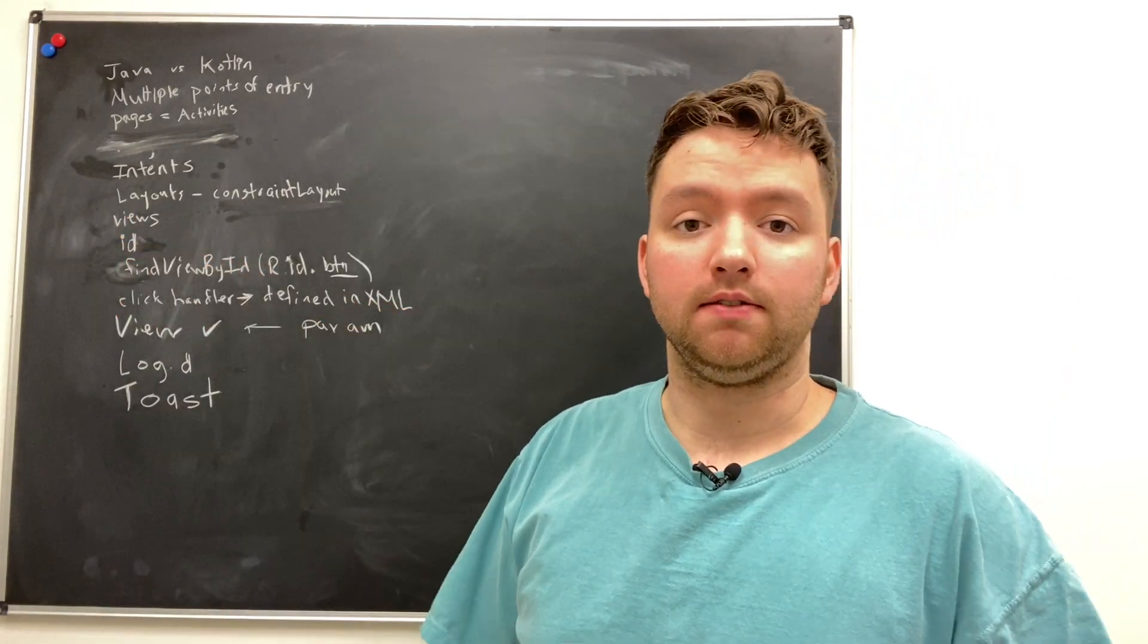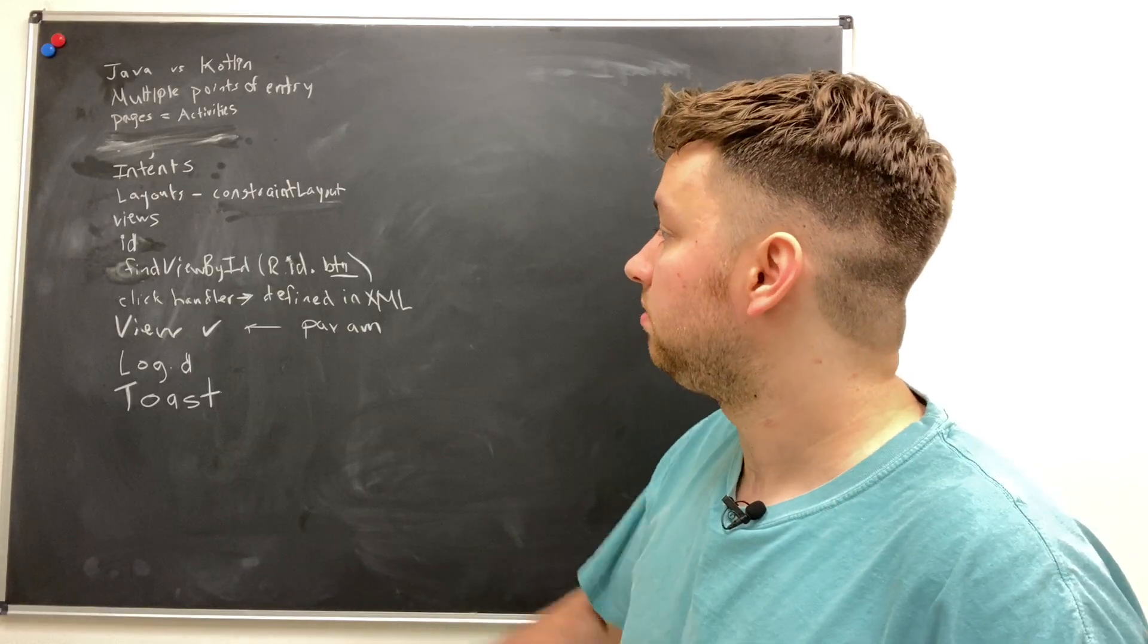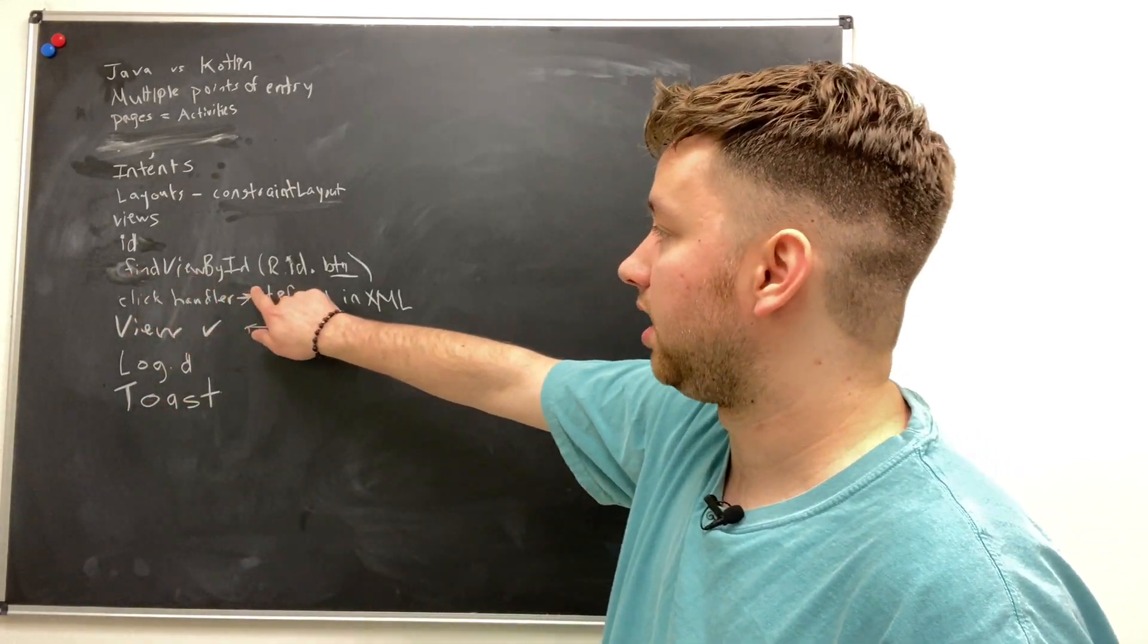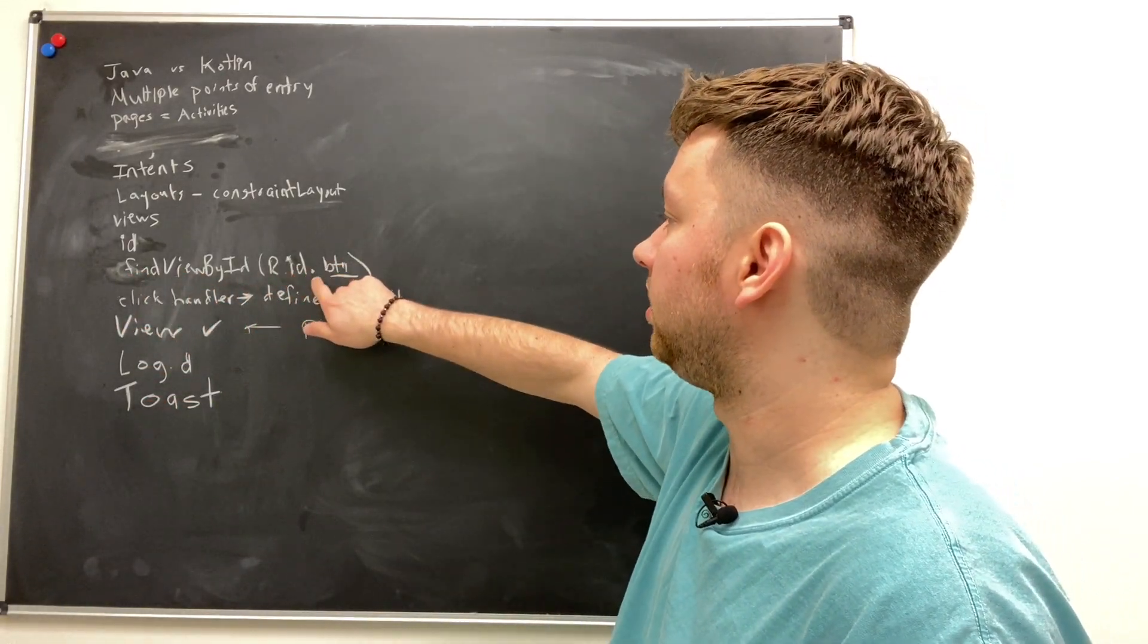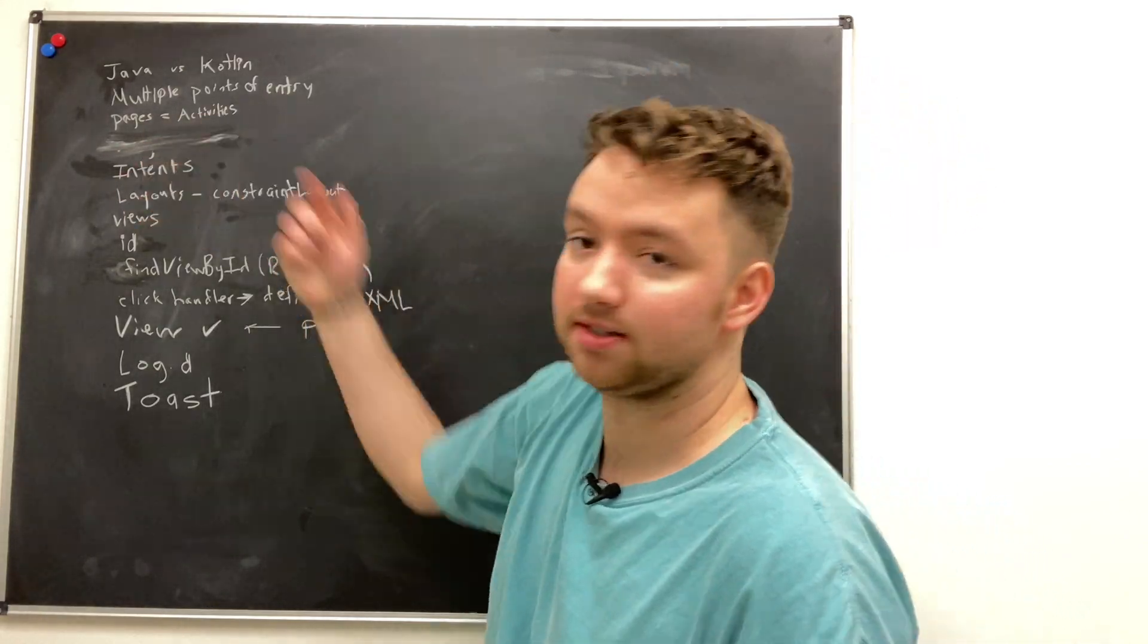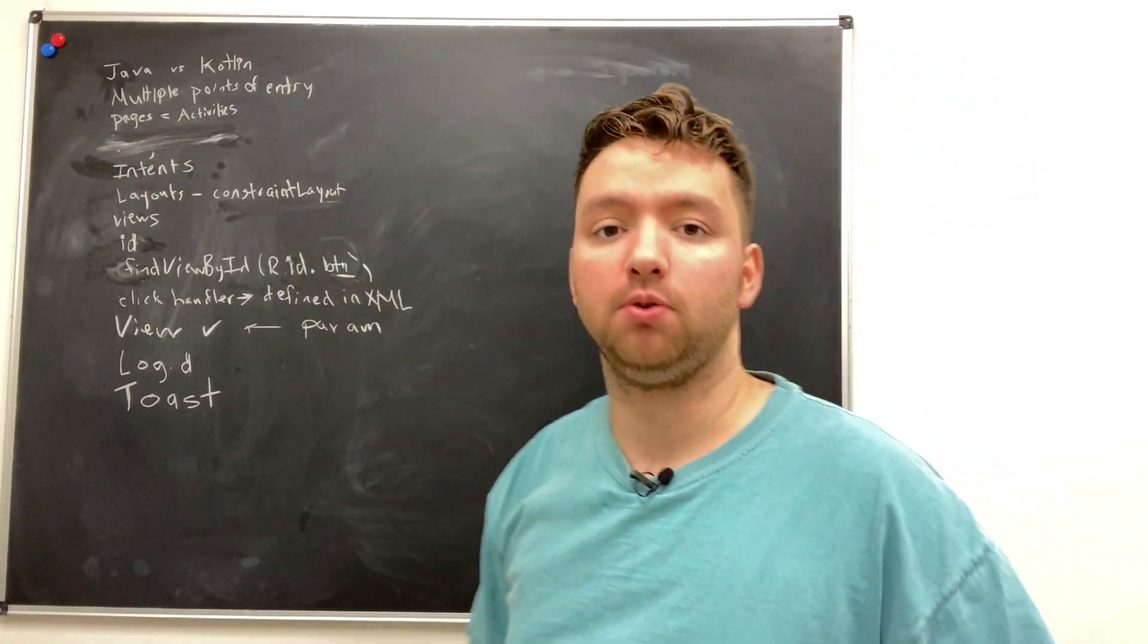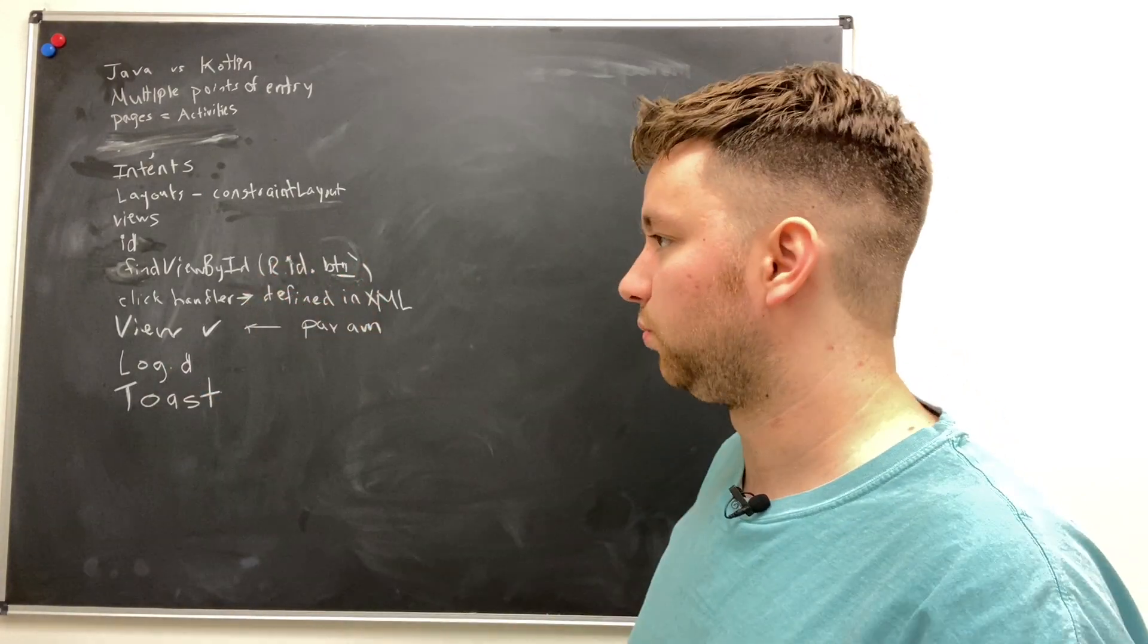Now we can give an ID to these views so we can reference them in code. And we do this by saying find view by ID, pass in r.id, dot whatever the ID that we assign it is. So for example, button or button 11 or whatever it might be.